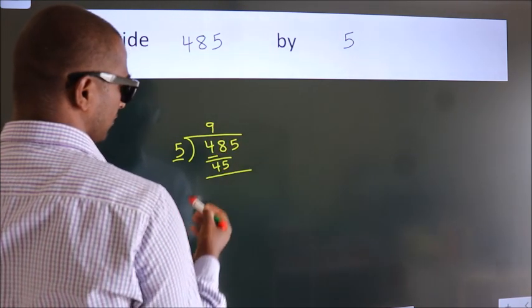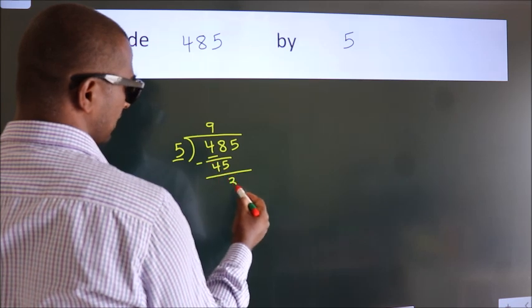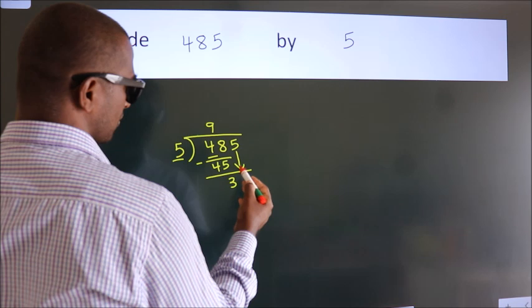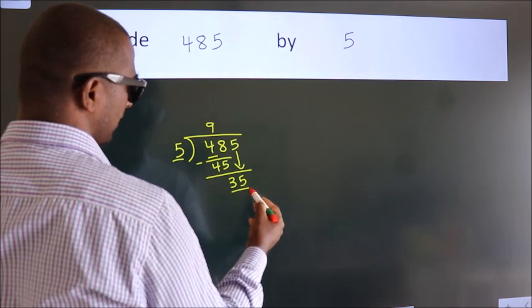Now we should subtract. We get 3. After this, bring down the beside number. So 5 down. So 35.